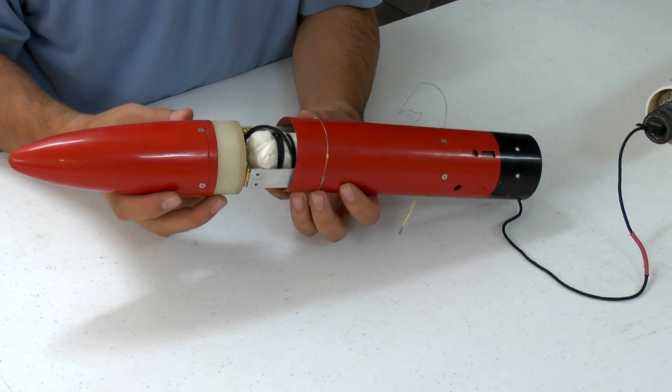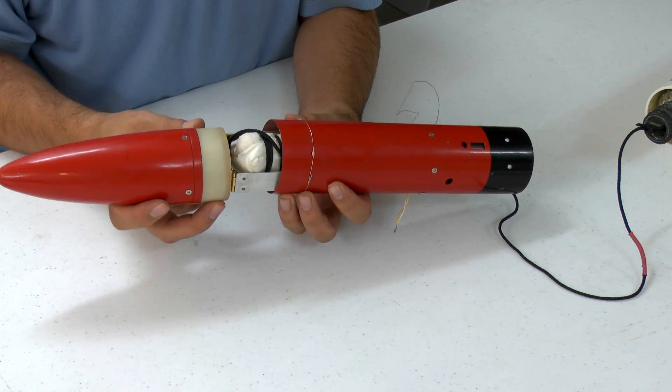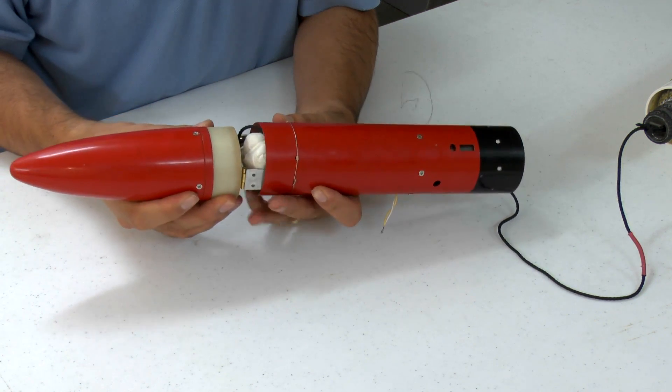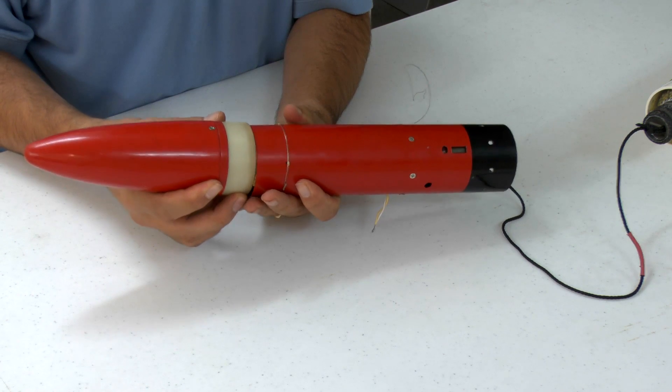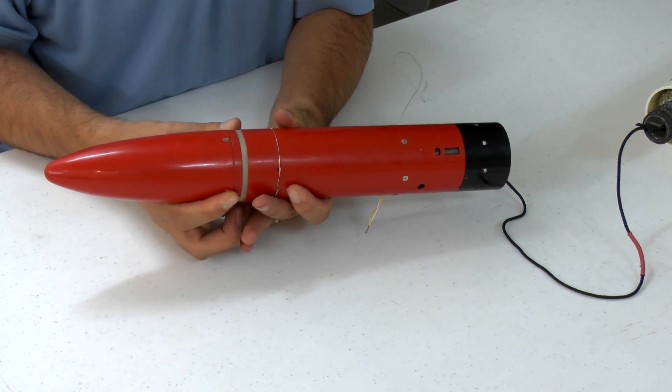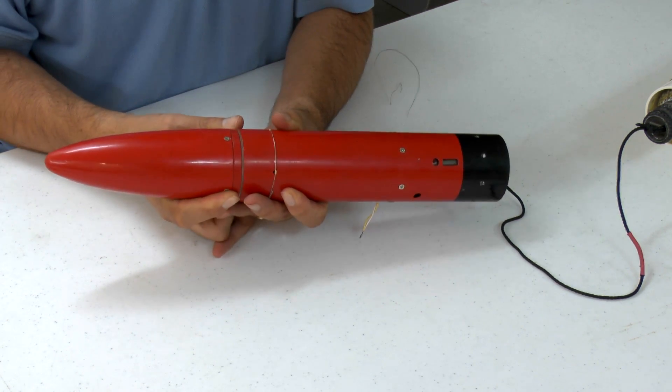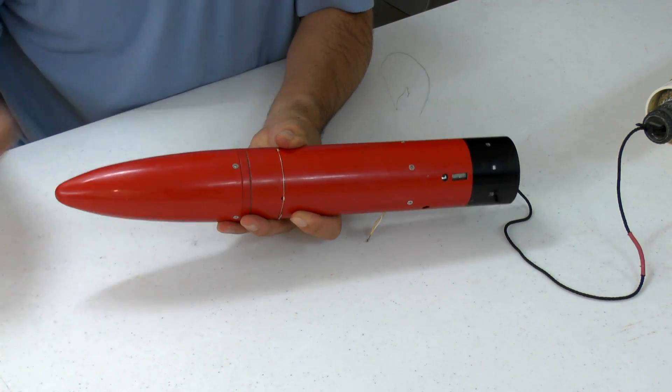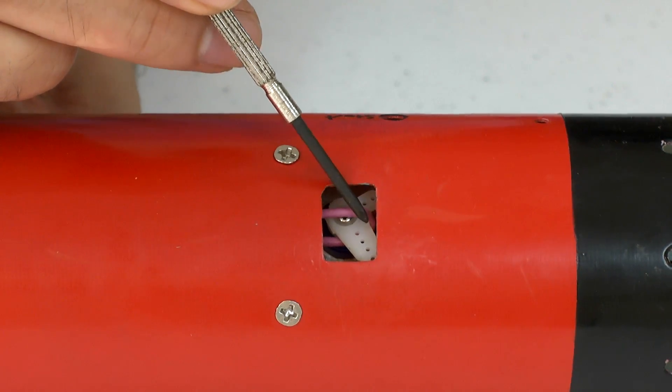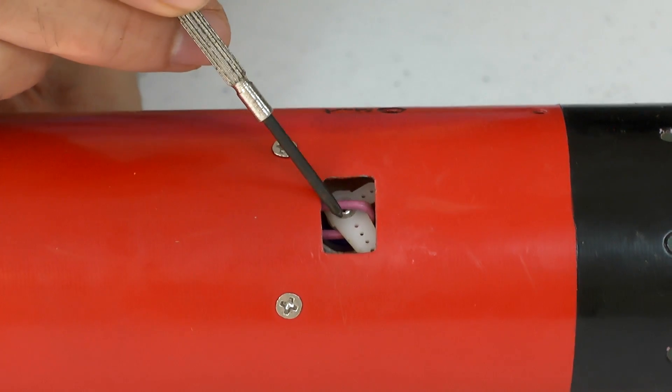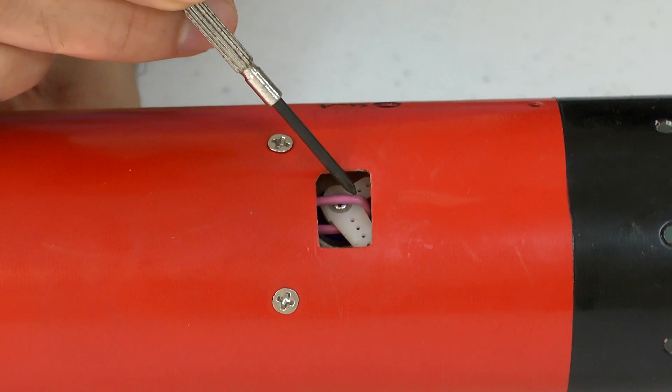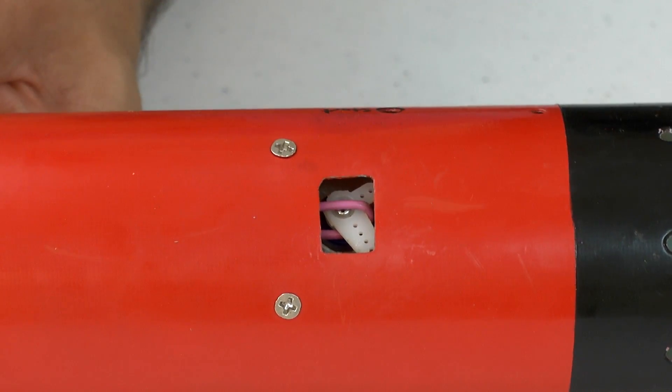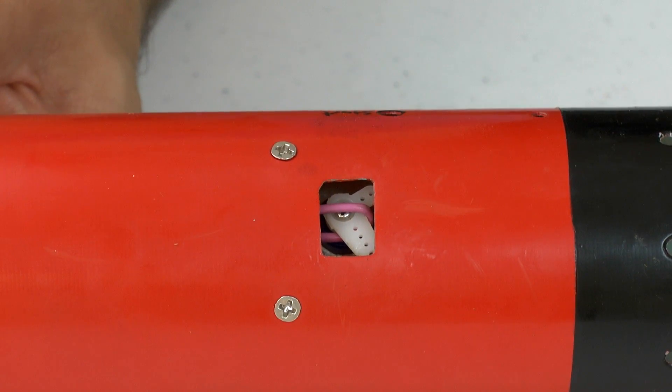So here we've hooked the rubber bands onto the grapple arms and put the parachute in, and then it's just a matter of compressing it. You can see it's quite a bit of force, and then we just hook it over the servo motor. Here you can see the wire from the grapple arm hooked over the servo arm. It's actually hooked over the center of the axle to provide maximum strength.